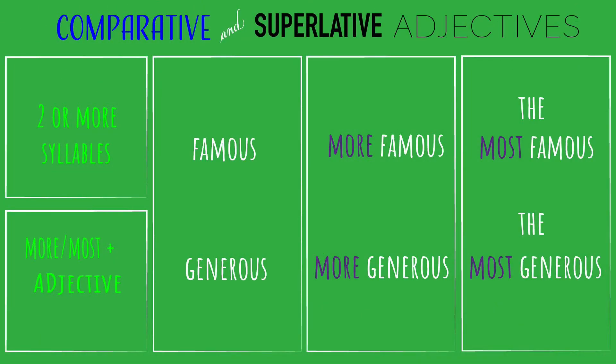For two or more syllables, we use the words more or most with the adjective to create comparative and superlative adjectives. For example: famous, more famous, the most famous. Generous, more generous, the most generous.